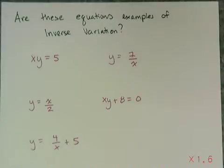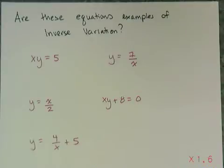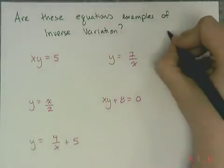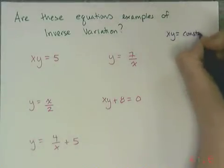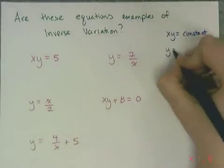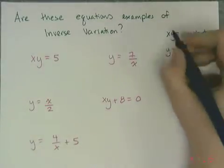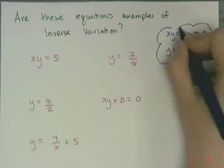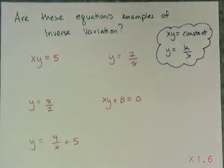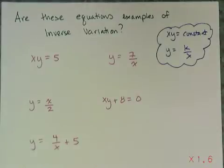I need to be able to determine if an equation represents an inversely proportional relationship or belongs to the family of inverse variation — just by looking at the equation. What's special about inversely proportional relationships is that either x times y equals some constant k, or in function form, y equals k over x. So I'm looking for equations in one of these two forms.